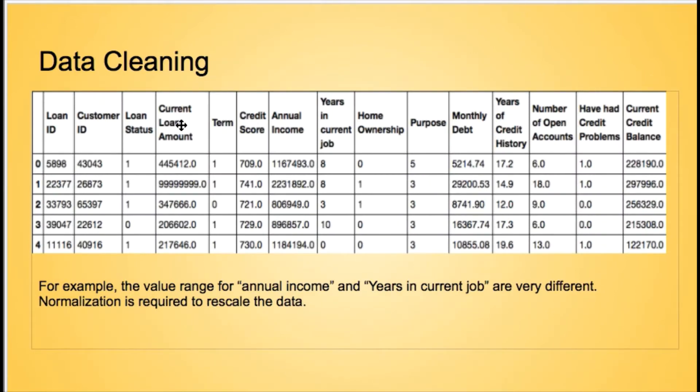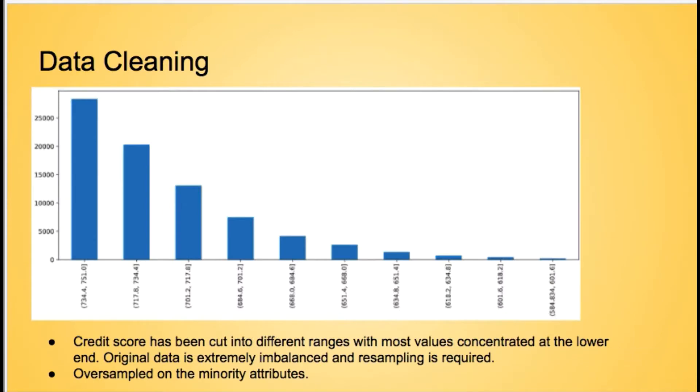After that, we found our dataset is still very distributed unequally because annual income has a very large value range, but years in current job has a relatively small value range. Then we needed normalization to rescale our dataset. The last step is to cut the credit score into different ranges, and we found that most values concentrated at the lower end. So we decided to resample, which is to over-sample the minority attributes in our dataset to get our finally cleaned dataset ready for model processing and data exploration.